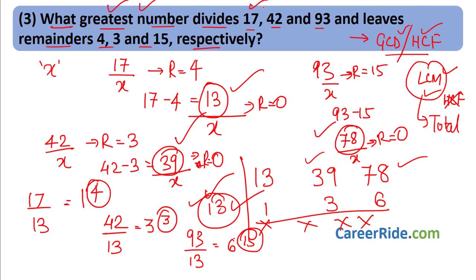Question 8: HCF and LCM of two numbers are 8 and 96. Their sum is 56. What is the sum of their reciprocals? Let the numbers be A and B. Then A+B=56 and A×B = HCF×LCM = 8×96. Sum of reciprocals = 1/A + 1/B = (A+B)/(A×B) = 56/(8×96) = 7/96. That is the answer.